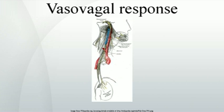A vasovagal episode, vasovagal response, or vasovagal attack is a malaise mediated by the vagus nerve. When it leads to syncope or fainting, it is called a vasovagal syncope, which is the most common type of fainting.